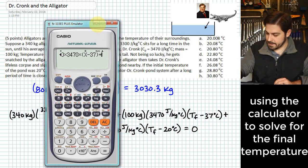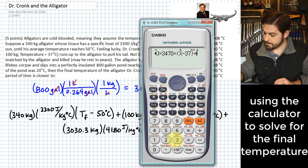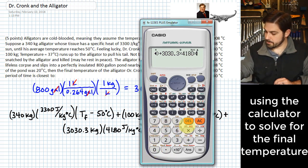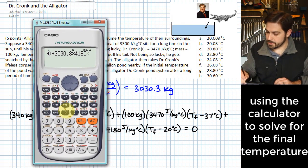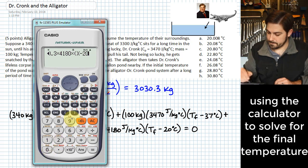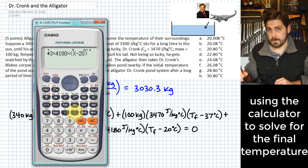To this, we are going to add this last term, 3030.3 times 4180 times, and again, we want to use x minus 20. And we're going to set all of this equal to zero and solve.